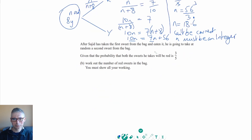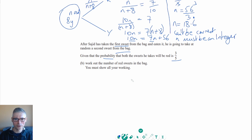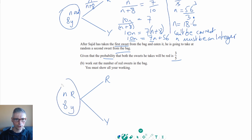Now turning to the second part of the question: Sajid takes the first sweet, eats it, then takes another sweet at random. Given that the probability both sweets are red is 3 fifths, we need to find the number of red sweets. Again using the probability tree, we had n red and 8 yellow originally, so the probability of picking red first is n over n plus 8.